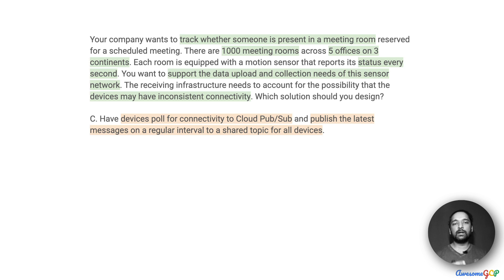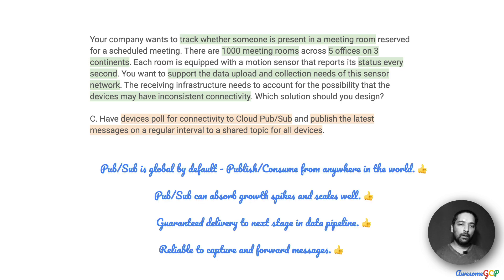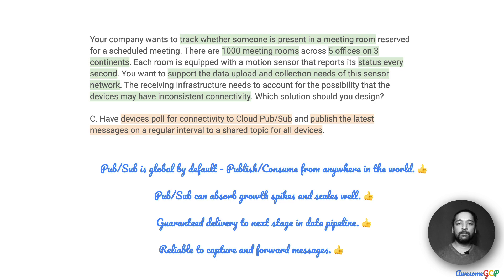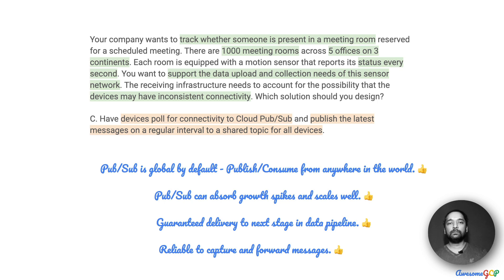Option C suggests having devices poll for connectivity to Cloud Pub/Sub and publish the latest messages at regular intervals to a shared topic for all devices. Pub/Sub is global by default — you can publish and subscribe from anywhere in the world and it will automatically scale for you. Since there is inconsistent connectivity, we may have events accumulated and arriving in sudden spikes, and our solution should scale well. Pub/Sub can absorb that kind of sudden growth and shield the later parts of the data processing pipeline from those spikes.